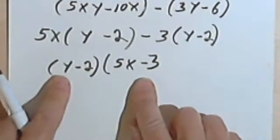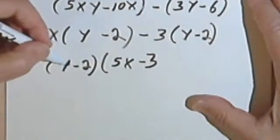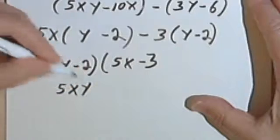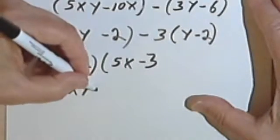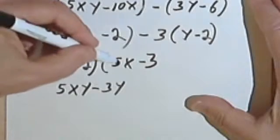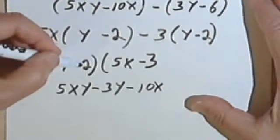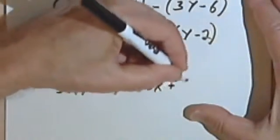And to check, I'm going to multiply it back just to make sure I get to where I started. So y times 5x is 5xy, y times negative 3 is negative 3y, negative 2 times 5x is negative 10x, and negative 2 times negative 3 is positive 6.